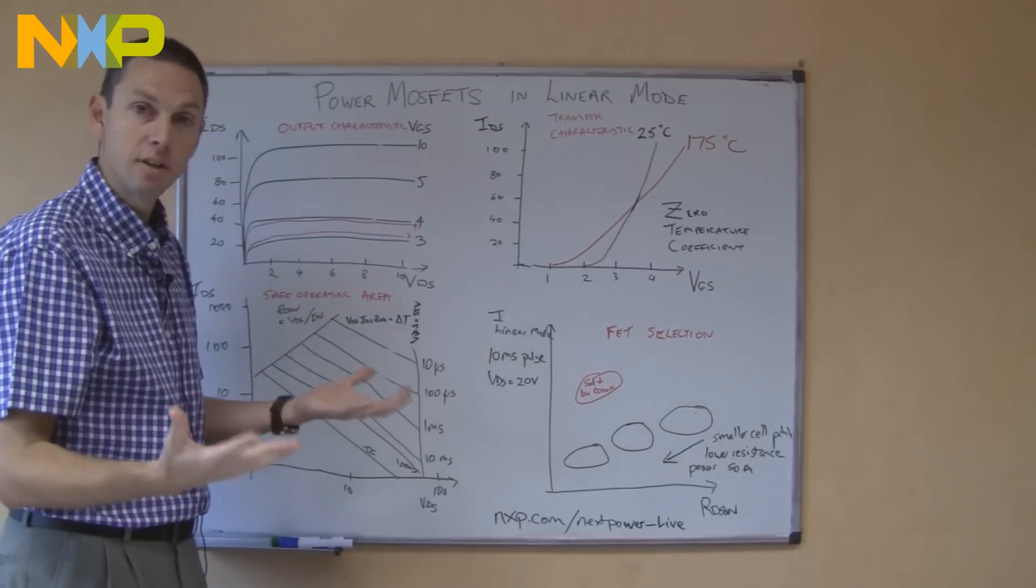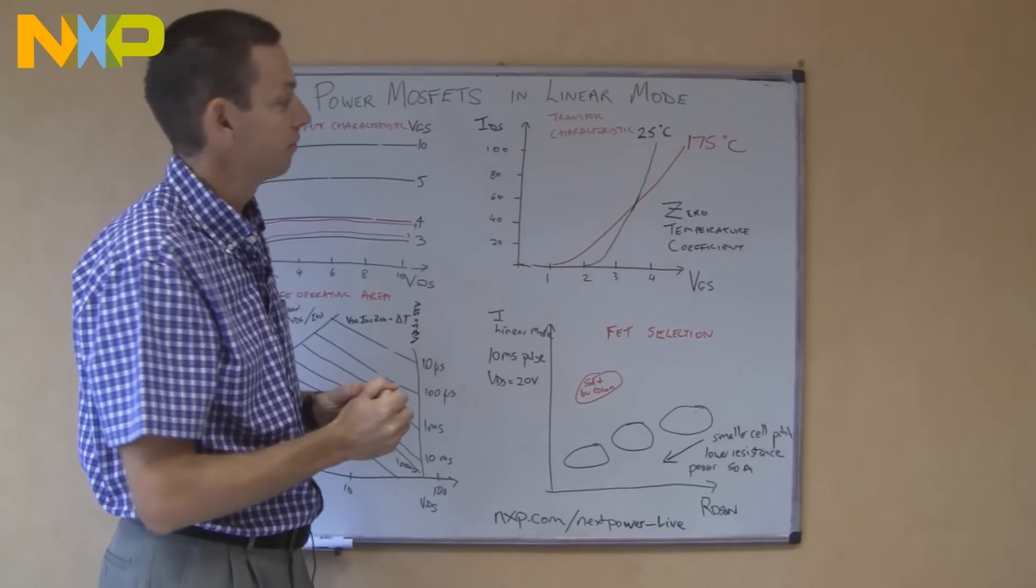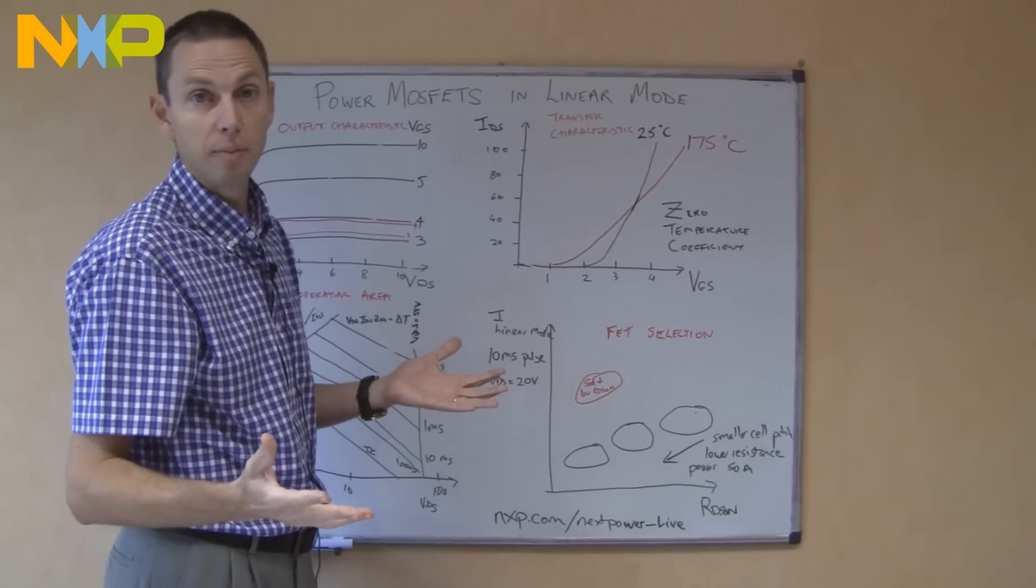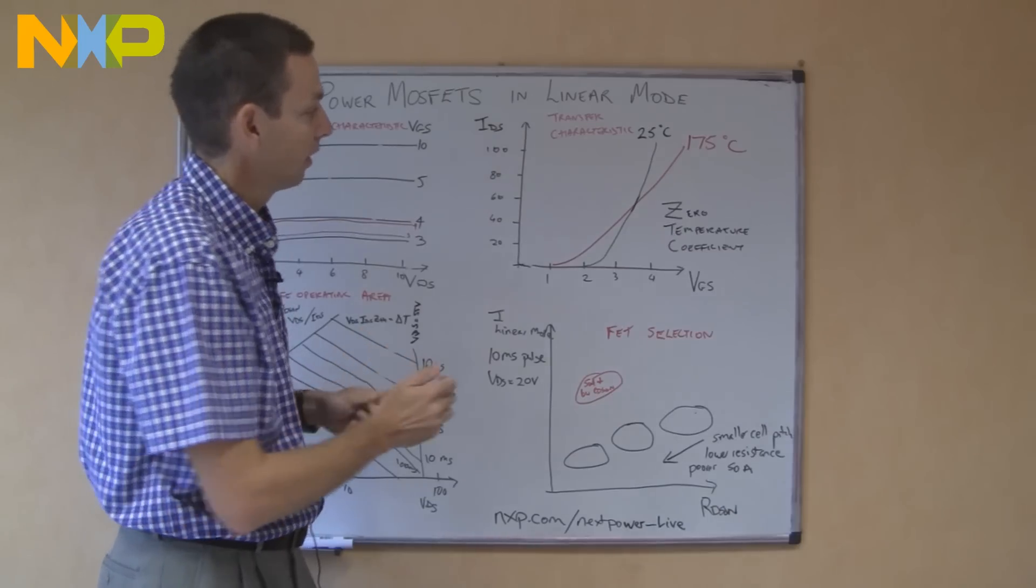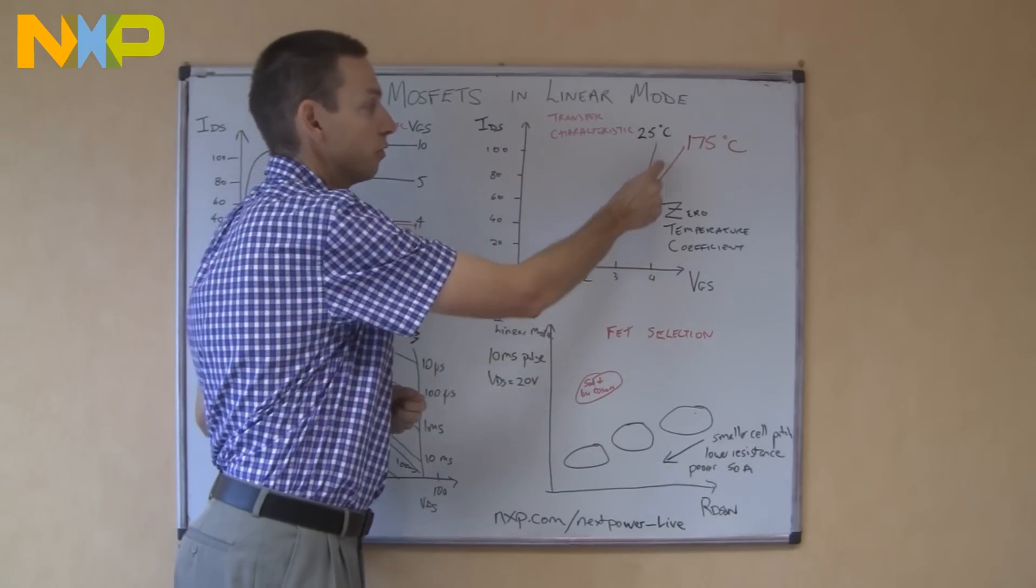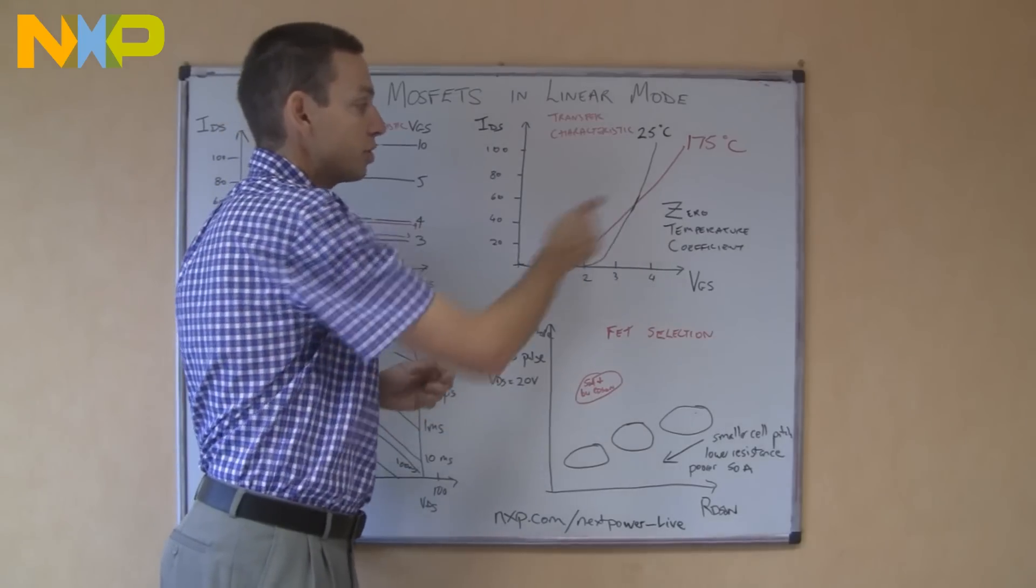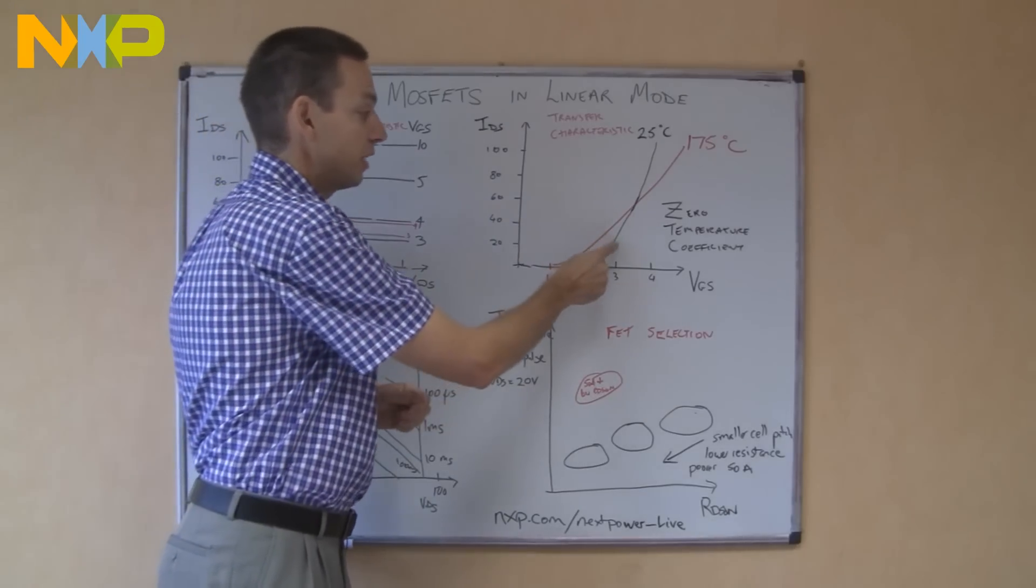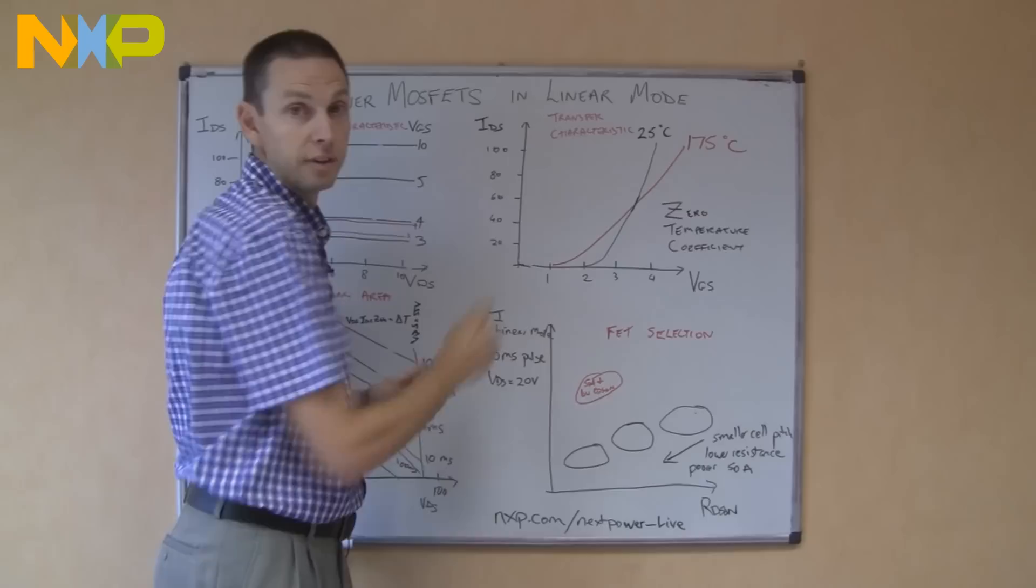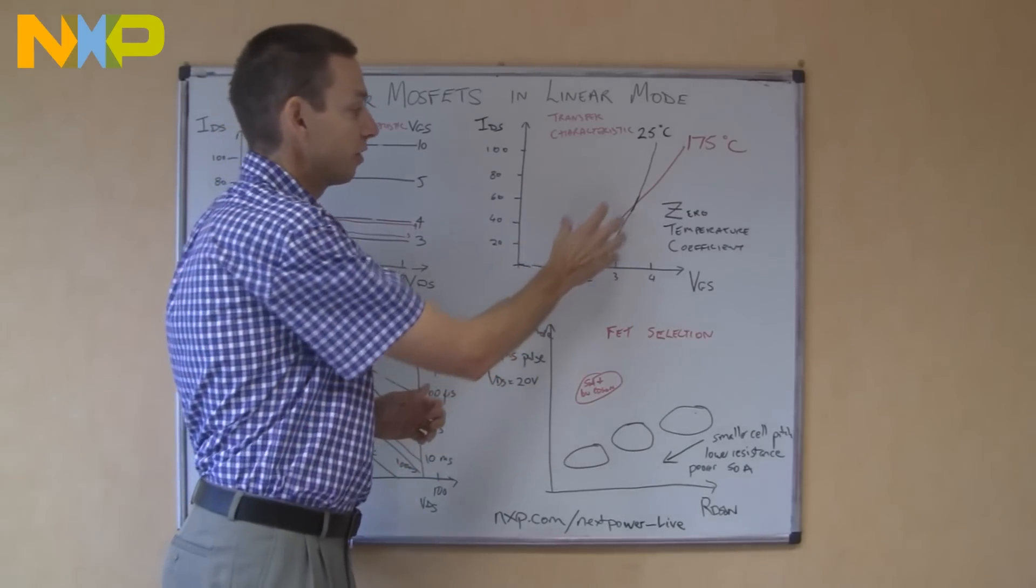Now over the years, the trend for MOSFETs has been that they've been designed to take more and more current. That's been achieved by changing the technology, making the technology pitch size smaller and smaller. The effect of that has been for this point to move to higher and higher currents. This zero temperature coefficient point now is above the operation mode of most MOSFETs. So that actually means every time you're switching, you're normally operating in this mode, you're switching where there's potentially thermal runaway. So we have to be very, very careful.